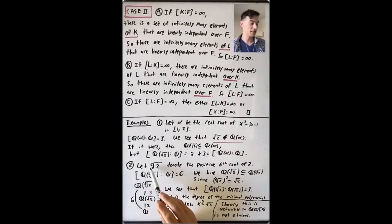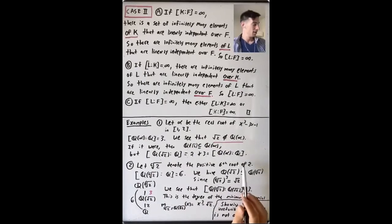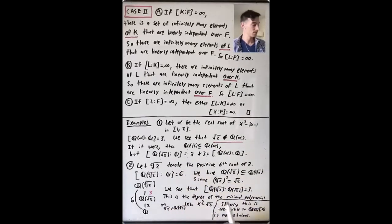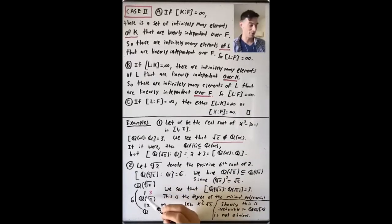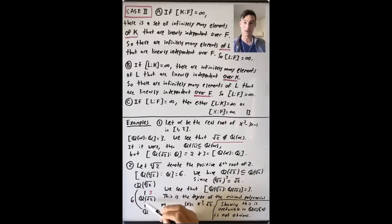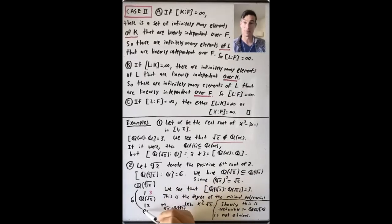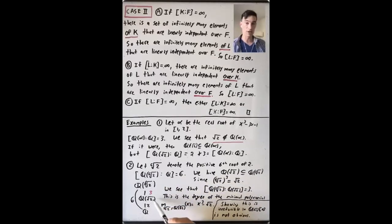Let's see another example. Write ⁶√2 to denote the positive sixth root of 2 in the real numbers. The minimal polynomial of this root is x⁶ - 2, so that's a degree 6 extension. This field Q(⁶√2) has Q(√2) as a subfield because if you cube ⁶√2 you get √2. So we have the diagram of field extensions: Q at the bottom, Q(√2) above it with degree 2, and Q(⁶√2) at the top with the whole extension having degree 6 over Q.